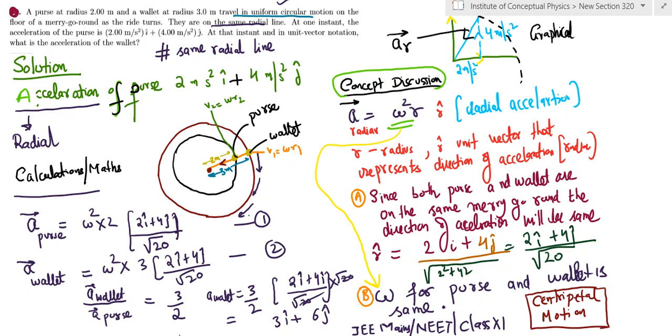We can calculate, you can see on the left hand side the calculation for purse has been done and the vector, the unit vector has been written. And this unit vector has come from the question itself, right? And similarly the vector for wallet has been written and the direction is the same.